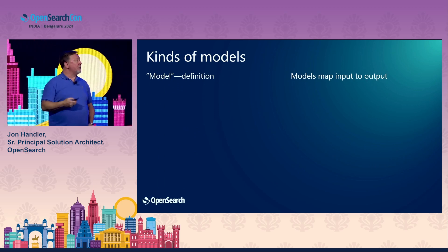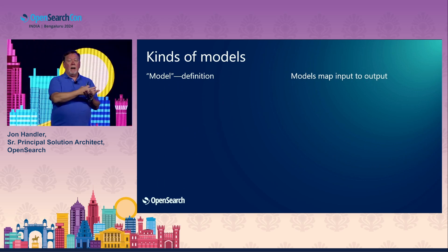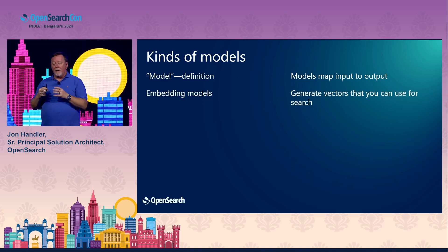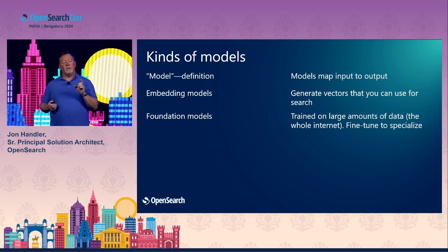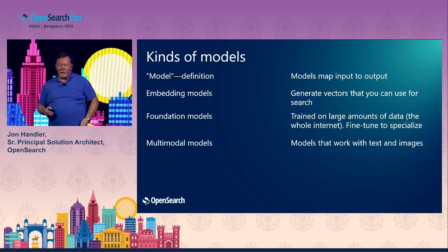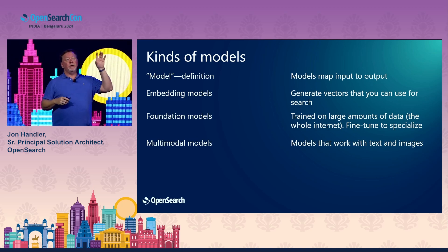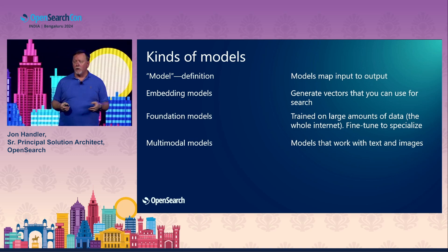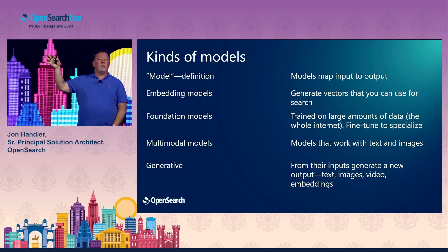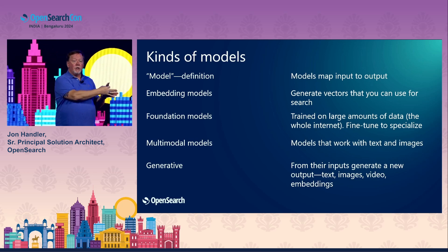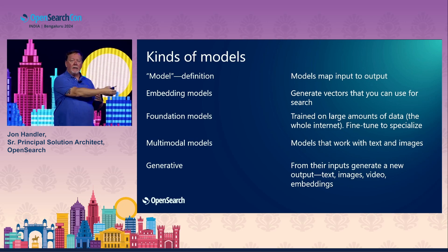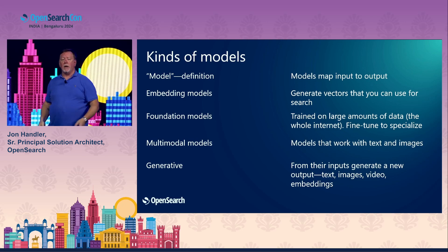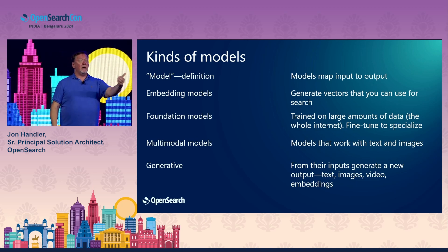A model is simply a mapping of an input to an output. Embedding models generate vectors from text. Foundation models are models trained on large amounts of text. Multimodal models work with images, text, sometimes video or other media. It's important to discriminate embedding generation from text generation — instead of generating a vector embedding, an LLM can generate an actual text response. When we do chatbots, these are text generation models.